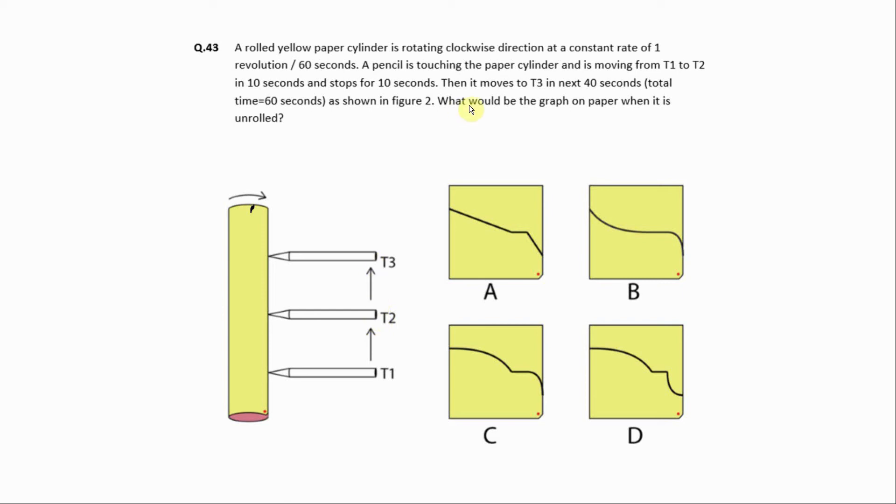So what would be the graph on the paper when it is unrolled? So when we will unroll it, which graph will we get at the same point?